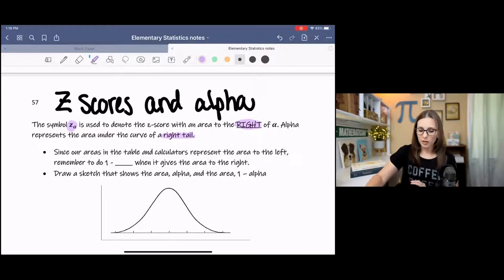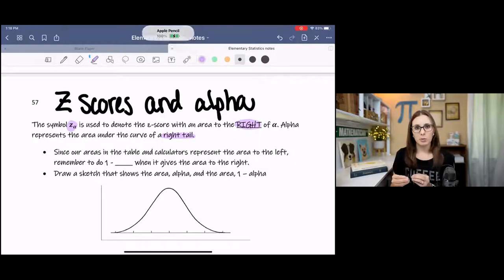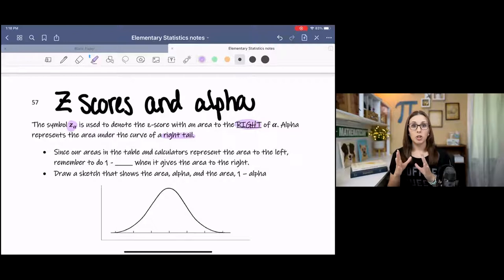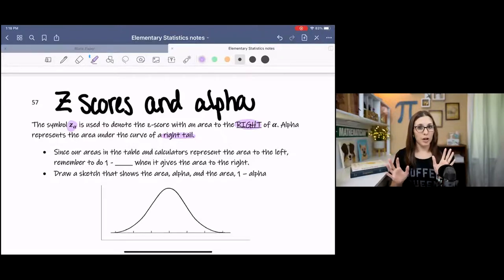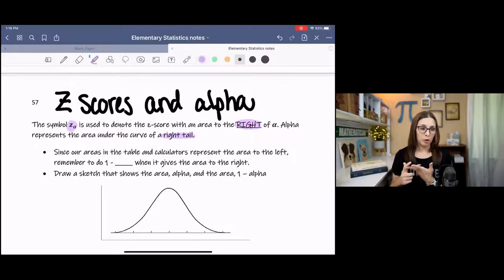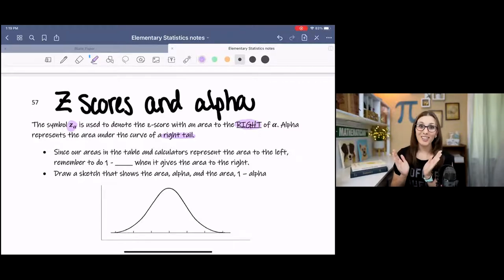So it is representing the area to the right of, alpha is the z-score to the right. And alpha is representing the area of the right tail. And I'm going over this specifically because in the previous lessons, when we look at z-tables and areas, I mentioned that these areas represent the areas to the left. And when you use your calculators, if you don't specify a region, you're telling it area to the left. And we had to use subtraction if we were wanting the other side.